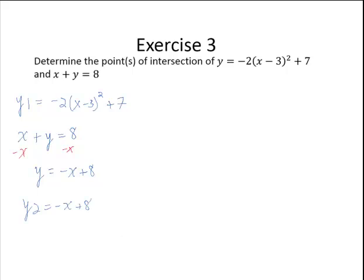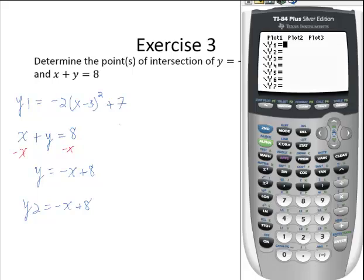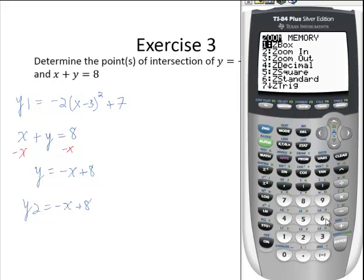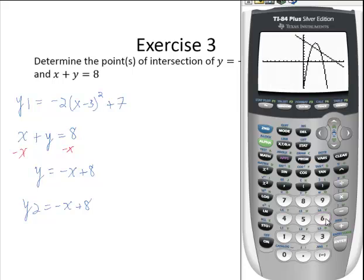Going to the calculator. Y1 is negative 2 by x minus 3 square plus 7, and y2 is negative x plus 8. Graphing these in the standard window by pressing zoom 6, I see two points of intersection.